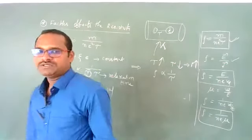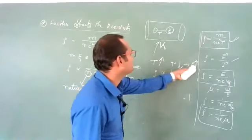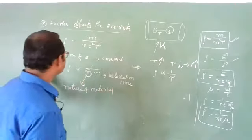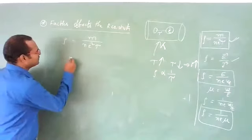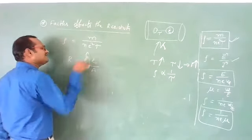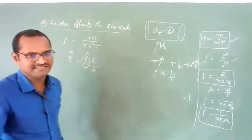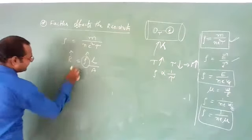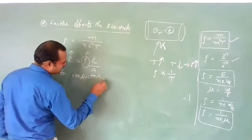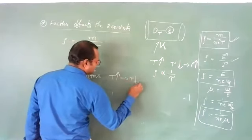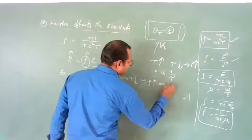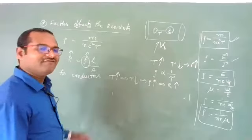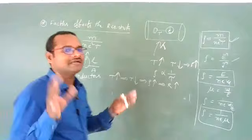So resistivity of a conductor depends on two factors: nature of the material and temperature. For conductors, with increase in temperature, relaxation time decreases, resistivity increases, and therefore resistance also increases. This applies to pure conductors — for semiconductors, the behavior is different and will be discussed later.